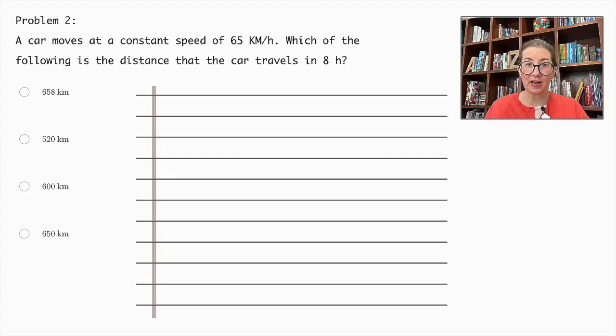In order to find our solution, we simply need to multiply the km per hour times the amount of time, which is 8 hours. So it's a constant speed of 65 km per hour. And they're traveling for 8 hours.